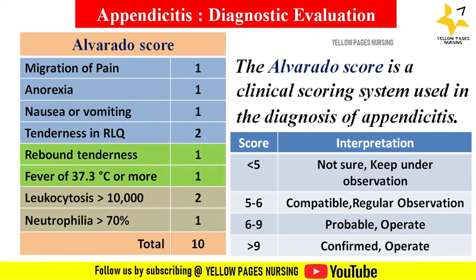The interpretation of the Alvarado score is as follows: a score less than 5 indicates uncertain — keep under observation; a score of 5 to 6 is compatible — consider for regular observation; a score of 6 to 9 is probable — should be operated; and a score of more than 9 is confirmed — must be operated.